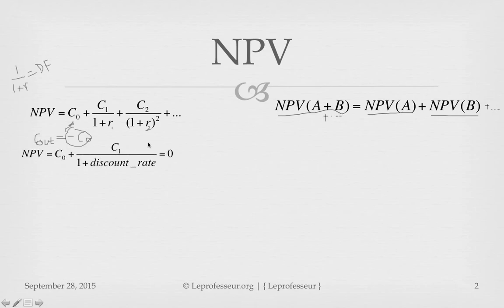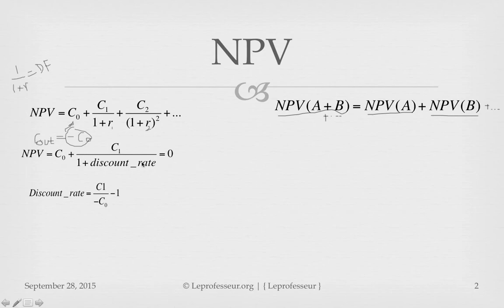Now, interestingly, if we equate NPV equal to zero, what is the discount rate that makes NPV equal to zero? We can call it the rate of return. So if we equate NPV for, say, the current period plus one more period, we get the discount rate equal to c1 divided by minus c0, minus one. When you have an investment and put the value in for c0, this gives you your rate of return.